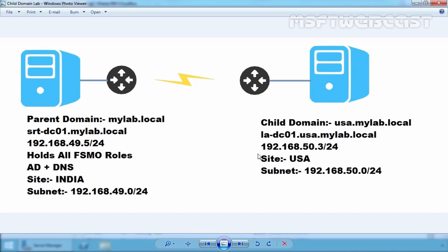In order to create a child domain on your network, you will need another server, or rather a Domain Controller. You can build that DC in your main office and then ship it out to the new office. That Domain Controller will also be a global catalog as well as the DNS server to service all the clients in the new office with any DNS requests.